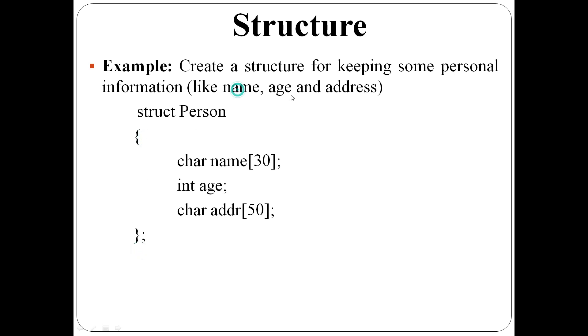First one is name. Name is a character array. So, char name of 30. 30 characters maximum. Second one is age. Age is an integer number. So, int age, semicolon. Third one is address. Address will be character array. So, char addr of 50.